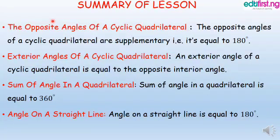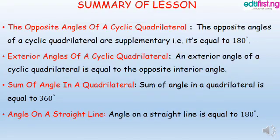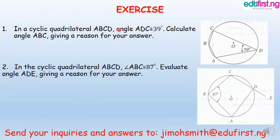That would be all. Summary of lesson: Theorem 5 — the opposite angles of a cyclic quadrilateral are supplementary, equal to 180 degrees. Theorem 6 — an exterior angle of a cyclic quadrilateral is equal to the opposite interior angle. Additional rules used: the sum of angles in a quadrilateral is equal to 360 degrees, and the angle on a straight line is equal to 180 degrees. Please send your inquiries and answers to the Gmail shown. Thank you.